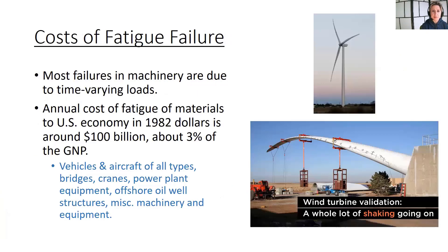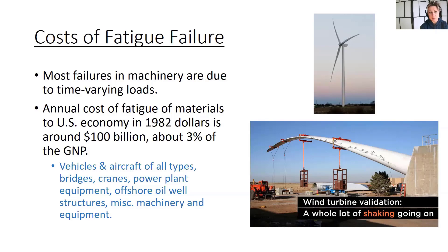Fatigue is a big deal. It's a really important topic for engineers, and most failures in machinery are due to fatigue failures from these time-varying loads. An older statistic — the annual cost of fatigue of materials to the US economy was about 100 billion dollars, about three percent of the GNP. And fatigue loading is prevalent — it's everywhere. It's way more common to find fatigue or cyclic loading rather than static loading: vehicles, aircraft, fridges, cranes, power plant equipment, offshore oil well structures, miscellaneous machinery, anything used on production lines.